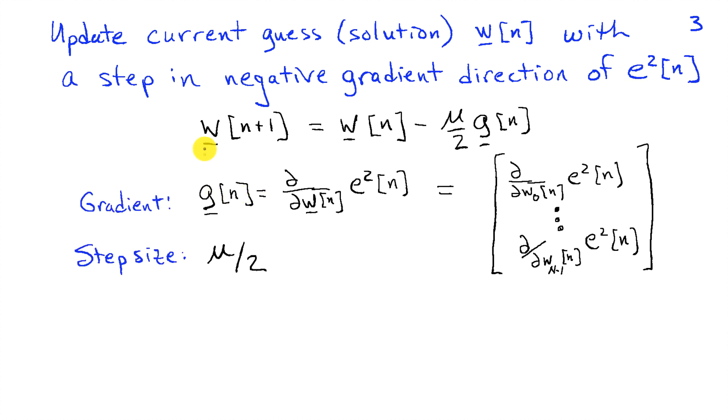I can write this as the new solution, w at step n plus 1, is equal to the solution at time or step n plus mu over 2 times the gradient at step n. I'm using this division by 2 just for convenience because the 2 is going to go away later. And the gradient, g, is defined as the partial with respect to the vector w at time n of the error.